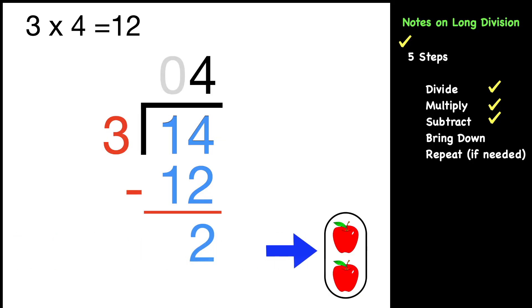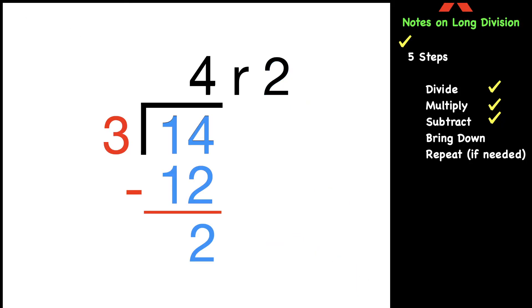That two is called a remainder. We're going to put that at the top. When you write your final answer, you would write it as 4R2, which is 4 with a remainder of 2. Notice that we did not do the bring down and repeat steps for this particular problem, but the next one we will.